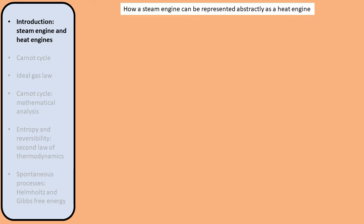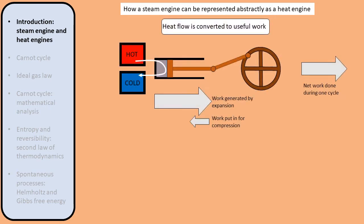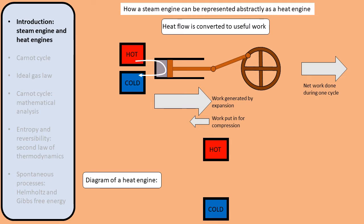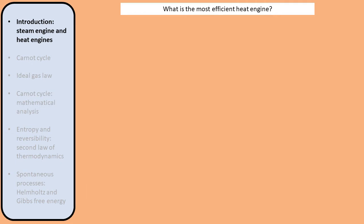Now let's reduce the working principle of the engine to its bare fundamentals. We saw that thanks to the flow of heat from hot to cold we were able to produce useful work. We can represent this abstractly as a heat engine — drawing the hot and cold reservoirs and the heat that flows between them. This flow of heat generates useful work. This simplified schematic illustrates the general working principle of a heat engine. Sadi Carnot then asked: what is the maximum possible efficiency of such a general heat engine?